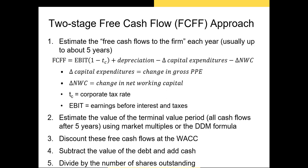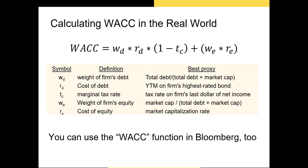We need to calculate the weighted average cost of capital to use the FCFF in the DCF model. WACC represents the cost to the firm for raising capital. We start by estimating the weights of debt and equity — the percentage of total firm capital provided by each. We use market values when possible, so we use market cap for equity. The book value of debt is often a close proxy for market value of debt, so that's typically the best number we can use.